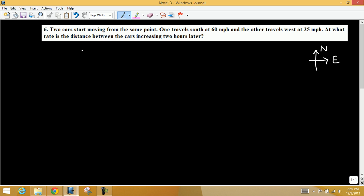In this question, two cars start moving from the same point. One travels south at 60 miles per hour, so dy/dt is 60 miles per hour. The other travels west at 25 miles per hour.